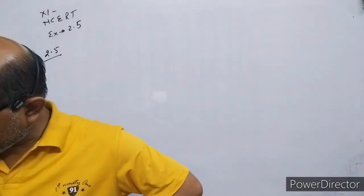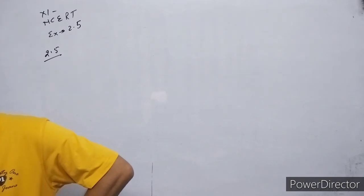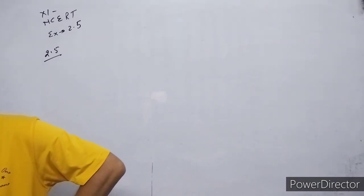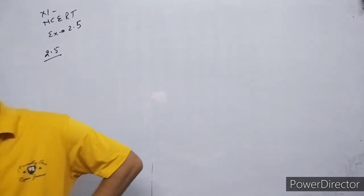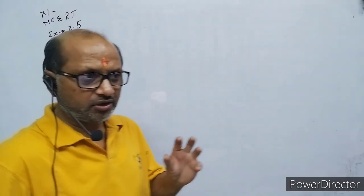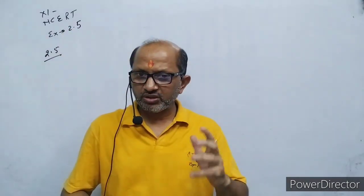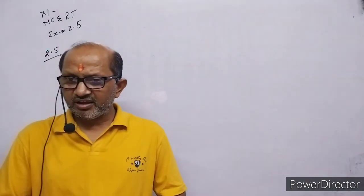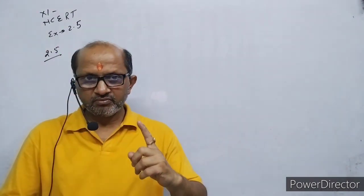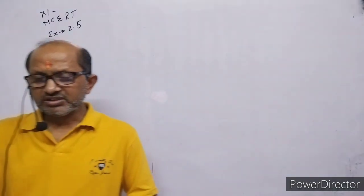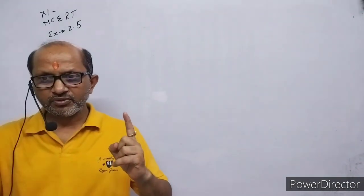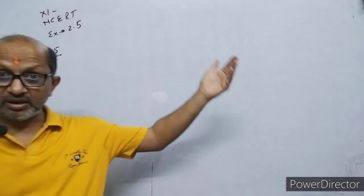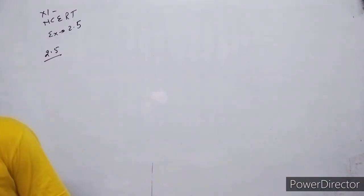A new unit of length is chosen so that the speed of light in vacuum is unity. The question is: what is the distance between the Sun and Earth in terms of this new unit?